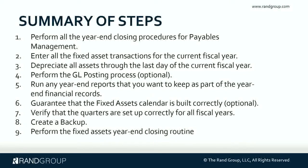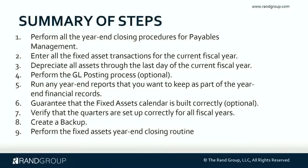Here's a summary of the steps. Number one, perform all the year-end closing procedures for payables management. Number two, enter all the fixed asset transactions for the current fiscal year. Number three, depreciate all assets through the last day of the current fiscal year. Number four, perform the GL posting process — this is optional. Number five, run any year-end reports you want to keep as part of the year-end financial records. Number six, guarantee that the fixed assets calendar is built correctly — again, this is optional. Number seven, verify that the quarters are set up correctly for all fiscal years. Number eight, create a backup. And number nine, perform the fixed assets year-end closing routine.